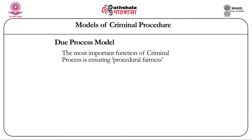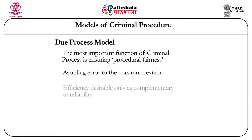The first characteristic of the Due Process Model is that the most important function of the criminal process is ensuring procedural fairness. As opposed to the Crime Control Model, which regards repression of crime as the most important function, the Due Process Model considers procedural fairness as the supreme function. Efficiency is a desirable characteristic, but only when complemented by reliability — reliability cannot be sacrificed for efficiency. At every stage of the proceedings, procedural formalities are strictly adhered to in order to avoid any possible violation of individual rights or error in fact-finding.